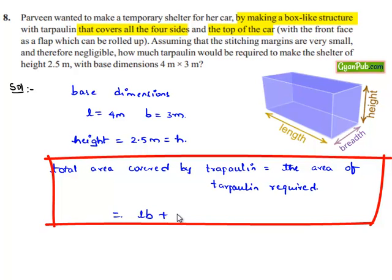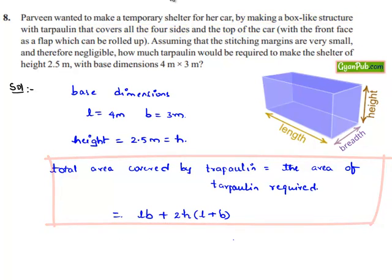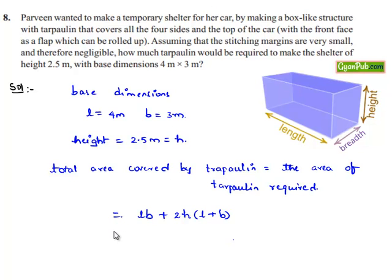The lateral surface area of a cuboid is 2h(l + b). Now let us substitute the values of length, breadth, and height, which equals lb + 2h(l + b) = (4 × 3) + 2(2.5)(4 + 3).